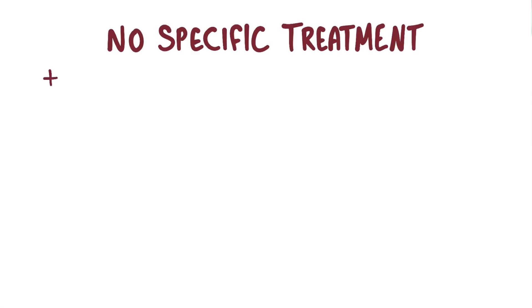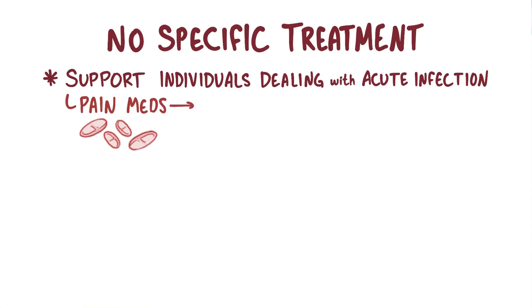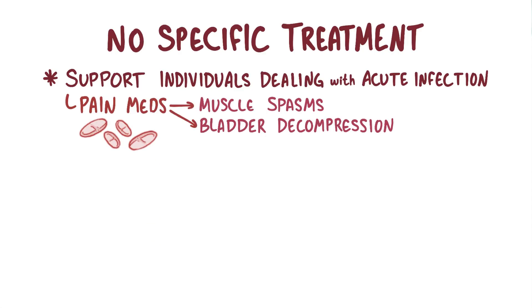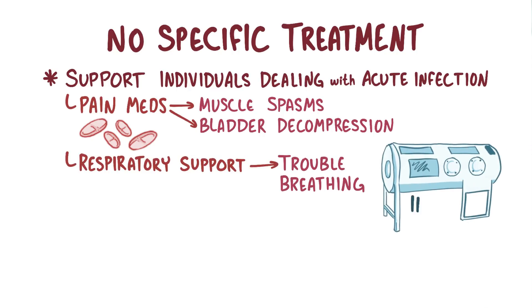There's no specific treatment for polio, but the key is to support individuals as they deal with the acute infection. Typically that means pain medication to help with muscle spasms and decompression of the bladder. Individuals might also need respiratory support if they have trouble breathing, something that historically required a device called the iron lung.